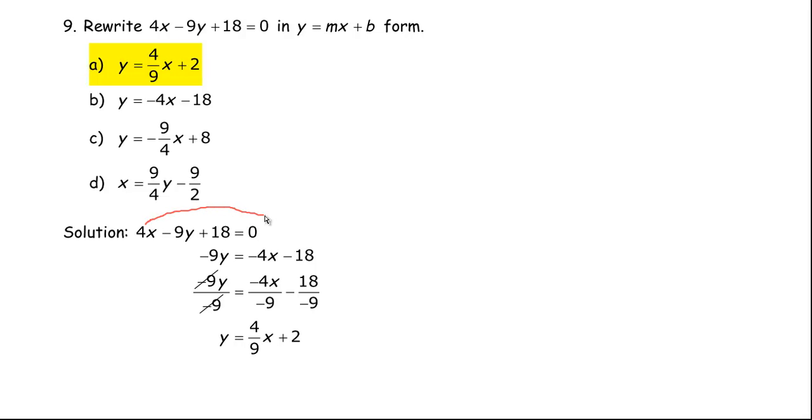I'm going to bring the 4x and the 18 both to the right side. So that 4x will be a -4x over here—remember the sign changes. And then the 18, same thing, will be a -18 over here.